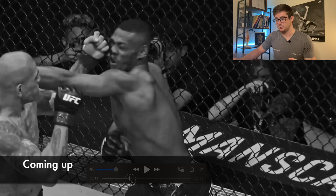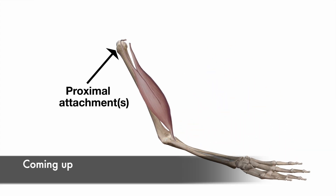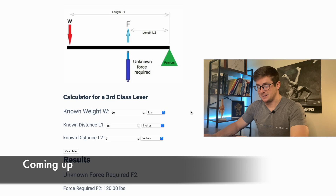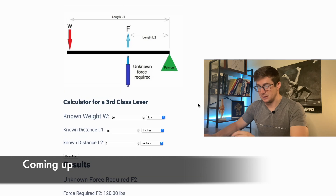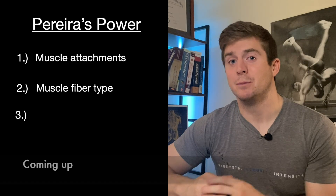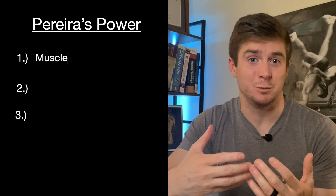In this video, I'm going to dive into Alex Pereira's knockout against Jamal Hill, discussing the biomechanics and the anatomy behind what makes him so powerful and how he generates that power when he fights. To set the stage, we have to point out something that I don't think is measurable at this point, but what I think is a foundational component to Alex's ability to produce power.